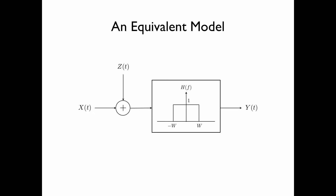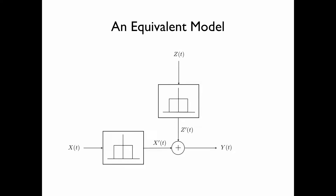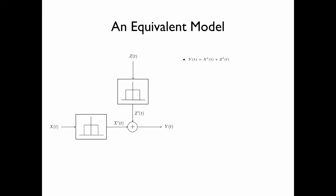This is the model of the band-limited Gaussian channel that we have introduced, where the filtering is done at the output. Equivalently, the filtering can be done at the input and also for the noise process. Here, the input x of t of the channel is first passed through a band-limited filter with bandwidth equal to w to obtain the process x prime of t. The noise process is passed through the same band-limited filter to obtain the process z prime of t, where x prime of t and z prime of t are added together to obtain y of t, the output of the channel.